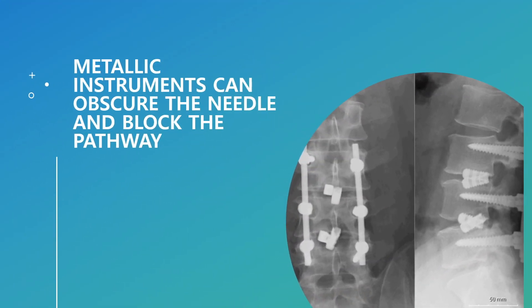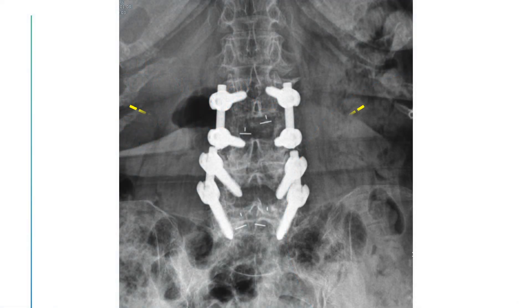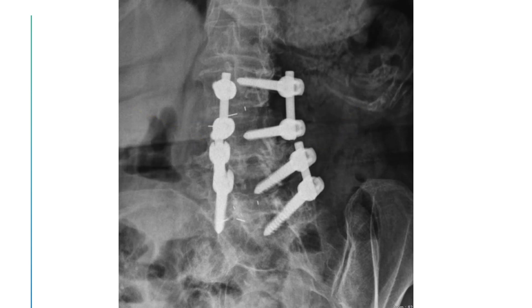It is the fifth challenging type. The metallic instrument can block the needle pathway and make it hard to visualize the needle. My target is the L3-4 intersegment, which is the level of broken metallic bars. It is challenging to find the safety triangle or opening of the intervertebral foramina.